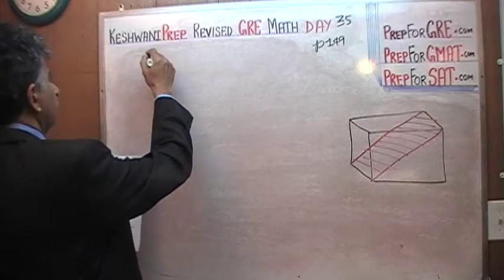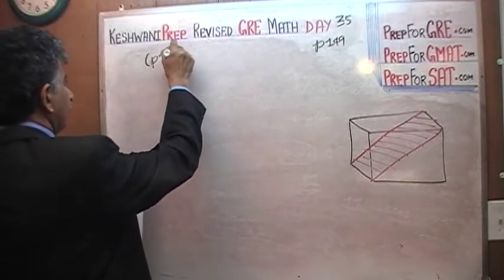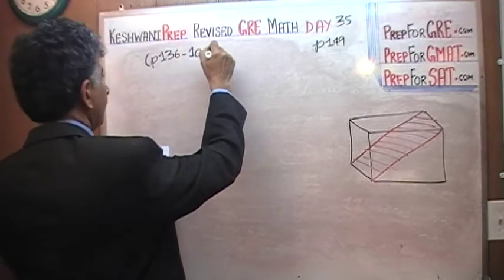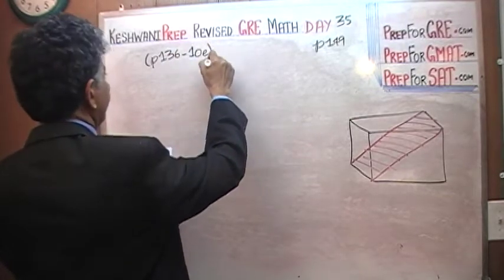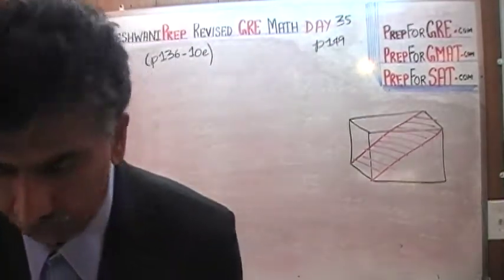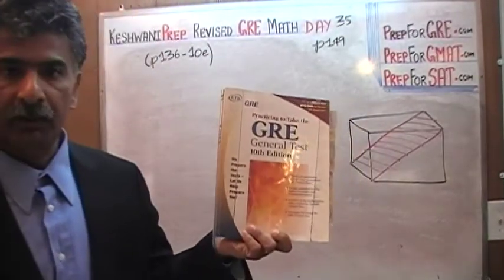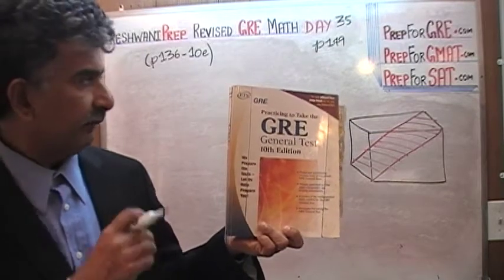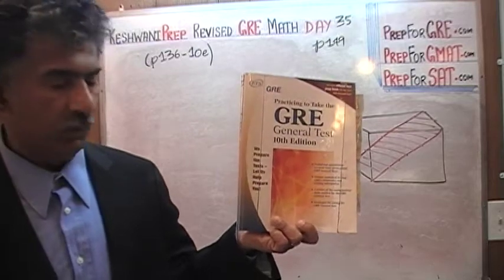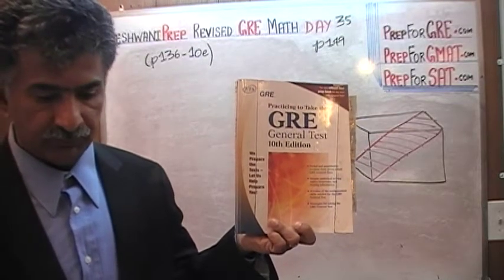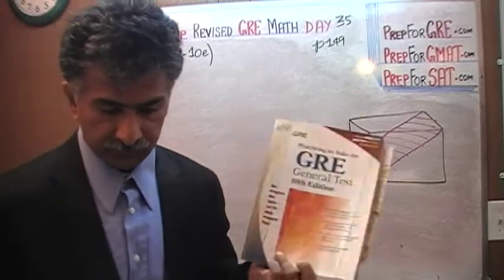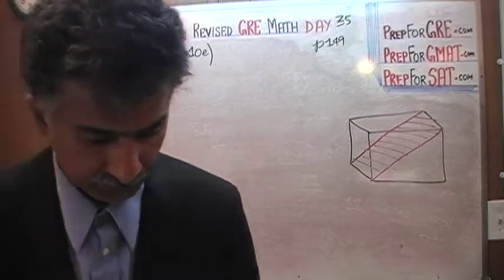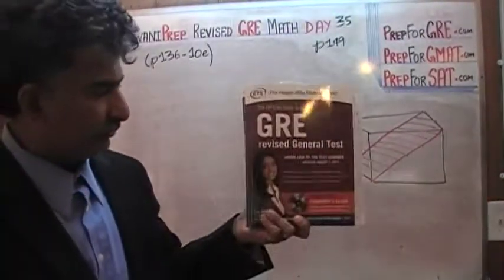The exact same problem you will find on page number 136 of 10th edition. Page 136 of the 10th edition book right here that I am holding in my hand. This is the old version of the SAT. The reason the same exact problem appeared in the older version is because there are some questions that are repeated, that they have used from the old book that I am holding in my hand and the new book that I just showed you which is the revised GRE.